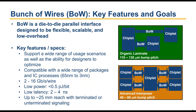Another differentiating factor is that BOW explicitly supports reach out to nominally about 25 millimeters with either terminated or unterminated signaling. In organic packaging scenarios where you may place a broad variety of chiplets with different dimensions, you can easily end up needing much longer reaches than you'd initially expect — for instance, routing around another chip along the way.